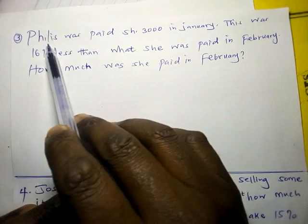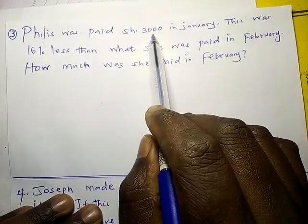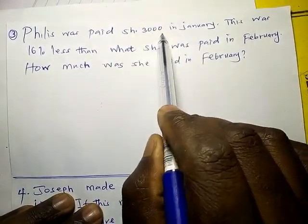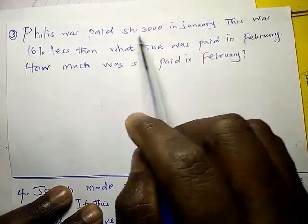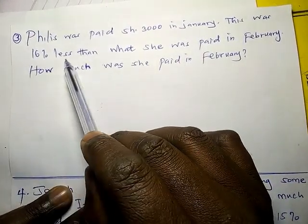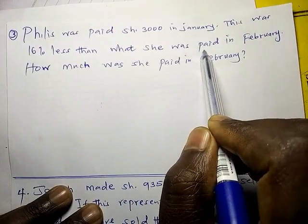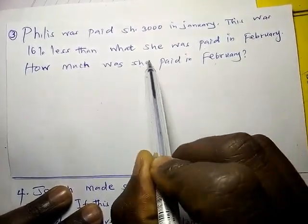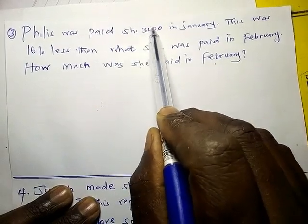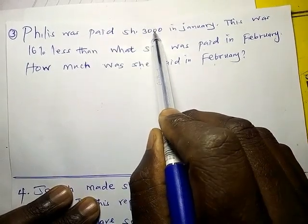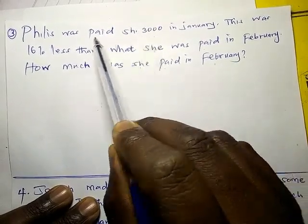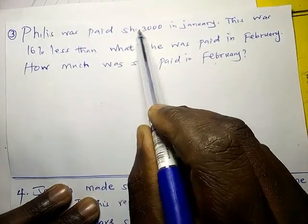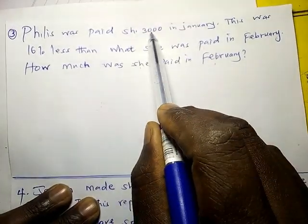Our next question: Viris was paid 3000 shillings in January. This was 16% less than what she was paid in February. How much was she paid in February? So after being paid 3000, this amount was 16% less than the original February amount.